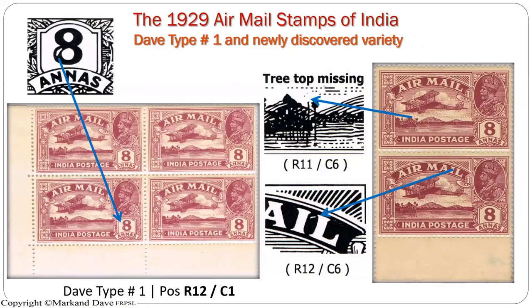Moving to the eight annas: type one from my book is a very nice flaw on the bottom loop of the numeral 8, and it is constant. The bottom corner marginal block confirms the position: row 12, column one. Now the treetop missing variety — interestingly, whenever you come across the treetop missing variety in a vertical pair, carefully study the bottom stamp. It also has a little dash between the I and L of 'Mail,' and if the treetop is constant, this dash is also constant. I have studied nearly 16 pairs and every single pair has this variety.